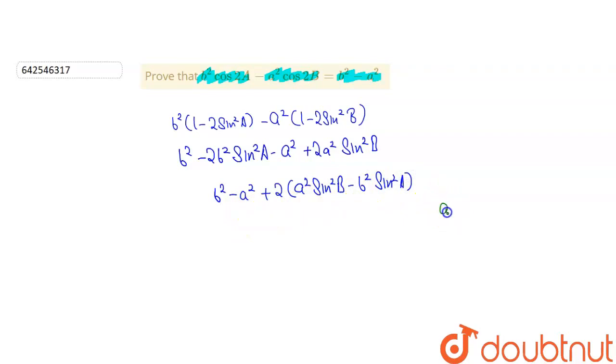As we know that a can be written as 2r sin A which will give us a squared is equal to 4r squared sin squared A. And similarly b squared will be 4r squared sin squared B.